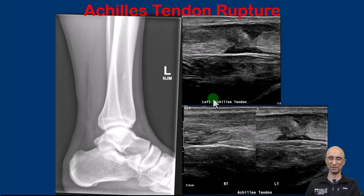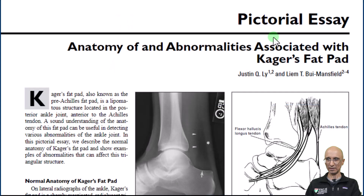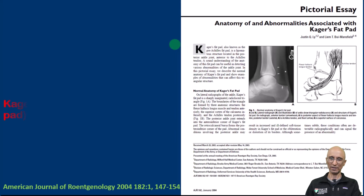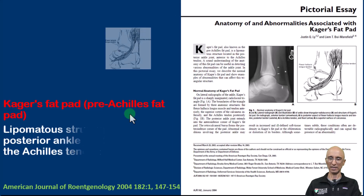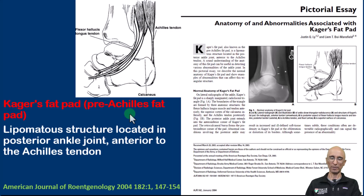Imaging appearances are consistent with Achilles tendon rupture. This is a nice pictorial article published in AJR which goes through the anatomy and various abnormalities that can be seen in the Kager's fat pad. Briefly, Kager's fat pad is also known as the pre-Achilles fat pad. It is a lipometallic structure situated posterior to the ankle joint and anterior to the Achilles tendon.